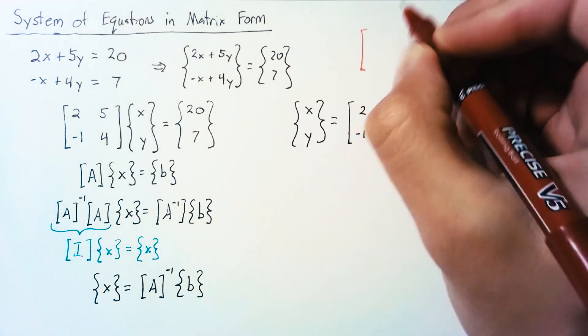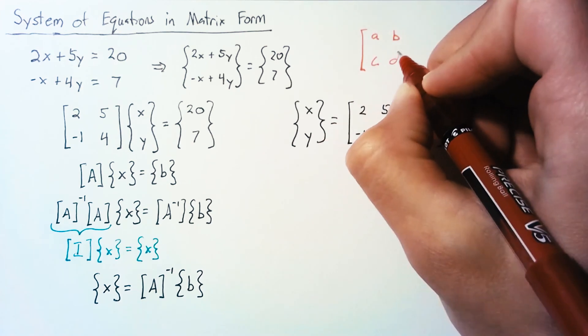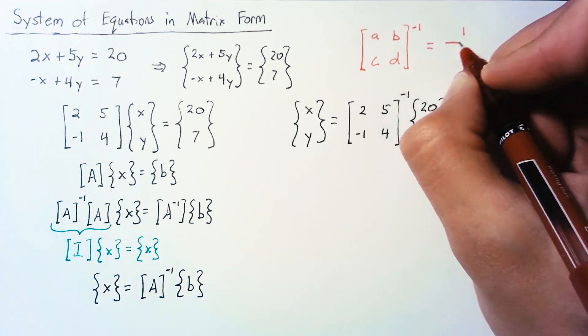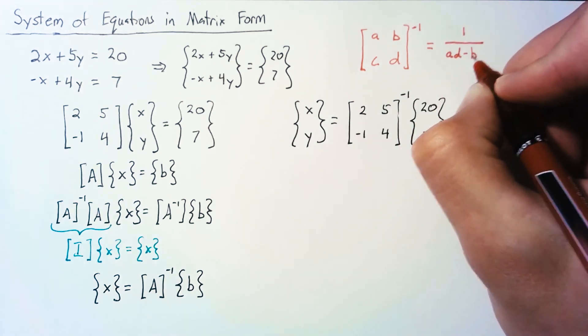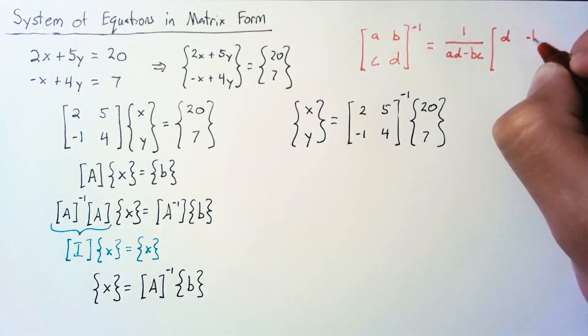And the formula that we get for that is that the inverse of a matrix that has some coefficients is going to be equal to 1 over something called the determinant multiplied by D, negative B, negative C, and A.